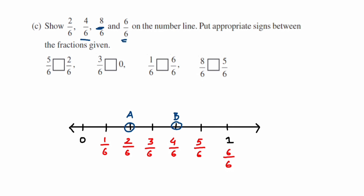For 8/6, since it is an improper fraction, it lies between one and two. We continue the number line beyond one, adding equal parts: 6/6, 7/6, and then 8/6, which is marked as point C. We stop there since 8/6 is the largest fraction we need to plot.